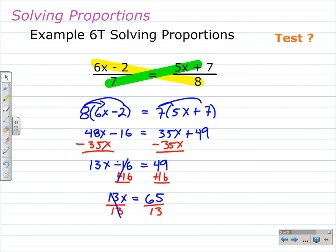Lastly we undo the multiplication with division, divide each side by 13, and the 13x divided by 13 leaves 1x or just x, and 65 divided by 13 is 5. After all that work the solution, the number that would make this equation true, is 5.